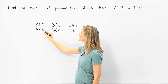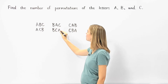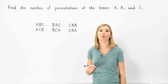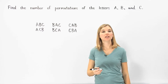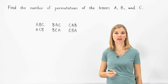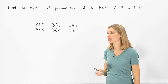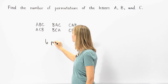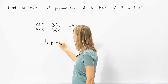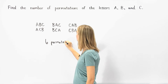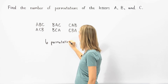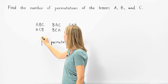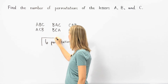So there are one, two, three, four, five, six ways we can arrange the order of the letters A, B, and C. Which means that there are six permutations of the letters A, B, and C.